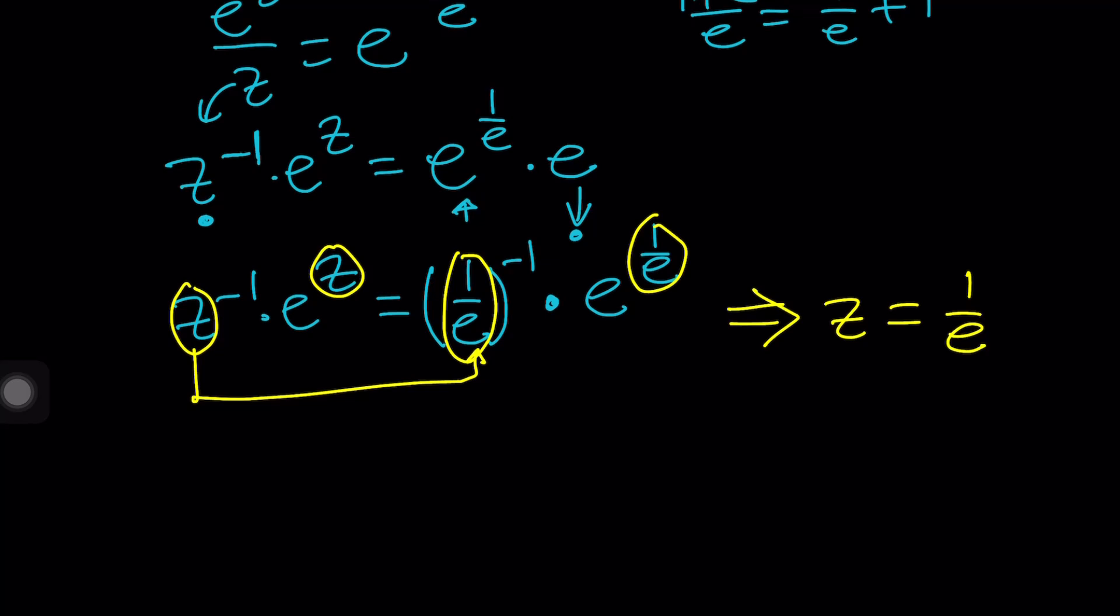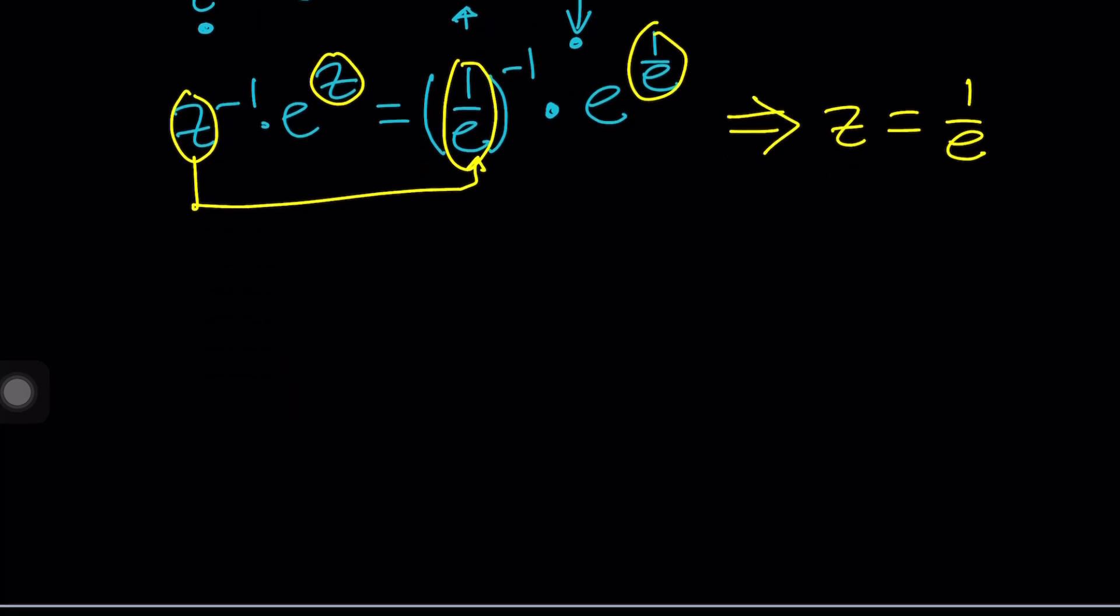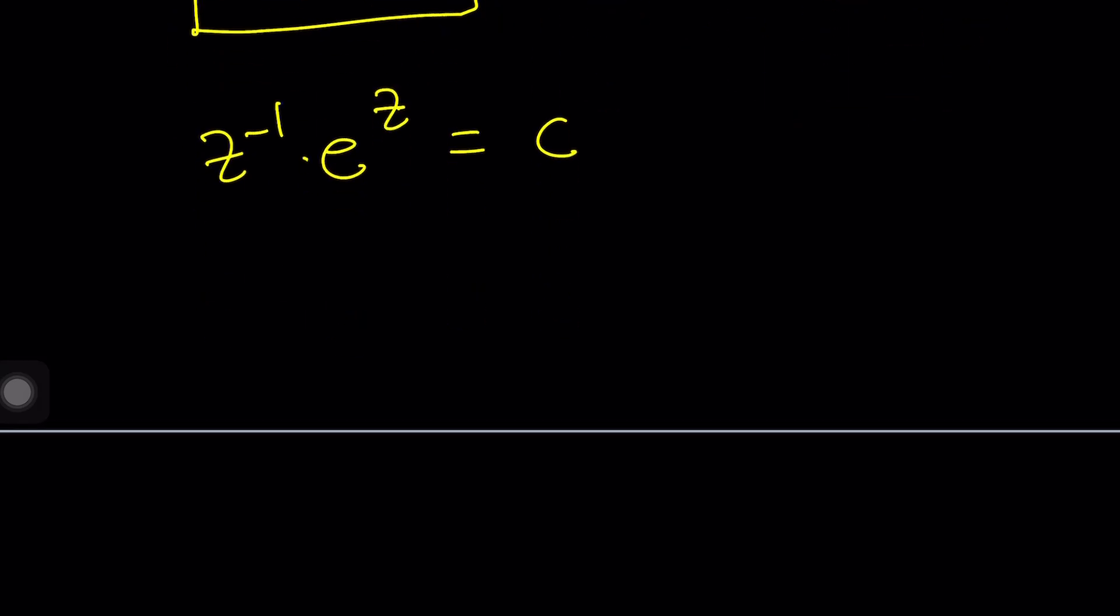We could also use Lambert's W function. For example, pick from here, like, take this. And then, I could probably manipulate this a little bit. Let's just add it equal to a constant C. Because, that's what it is. It's just a constant. But now, I don't want to keep writing the E to the power 1 over E plus 1 and so forth. Let's just use C for constant.